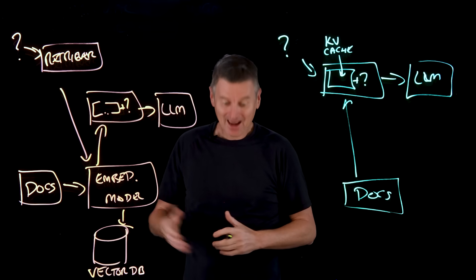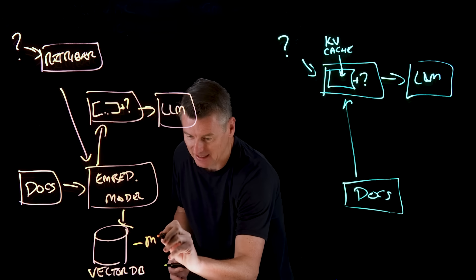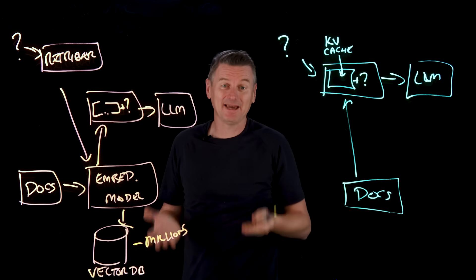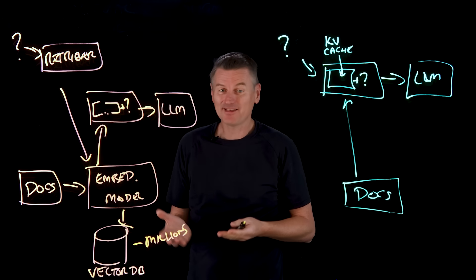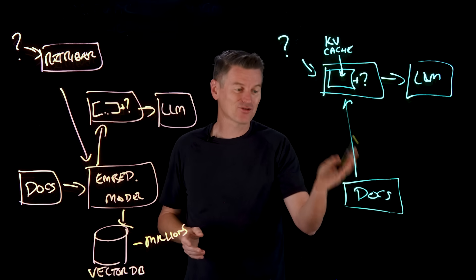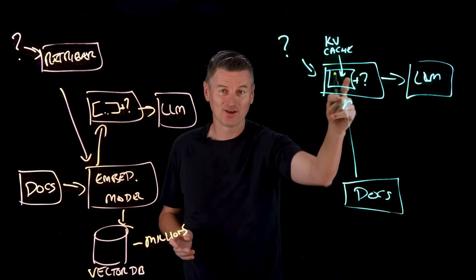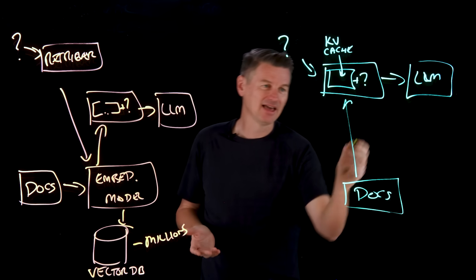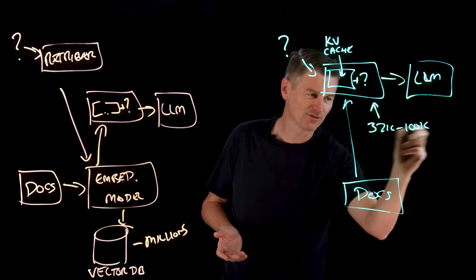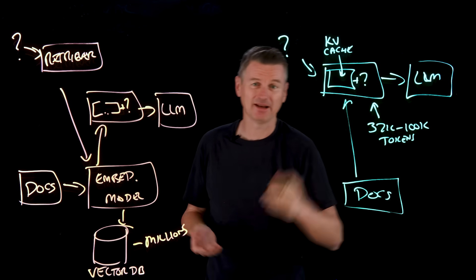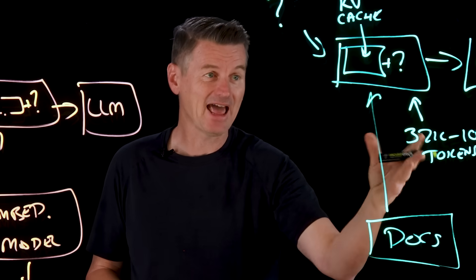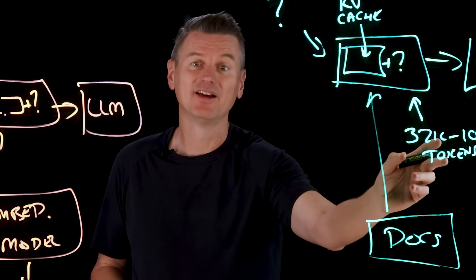With RAG, your knowledge base can be really, really large — millions of documents — because you're only retrieving small pieces at a time. The model only sees what's relevant for a particular query. Whereas with CAG, you are constrained by the size of the model's context window. A typical model today can have a context window of something like 32,000 to 100,000 tokens — some are a bit larger, but that's pretty standard. It's substantial, but it's still finite, and all of your documents need to fit in that window.